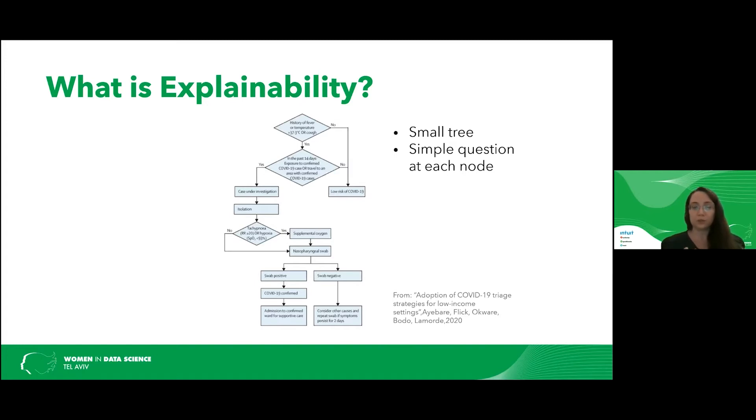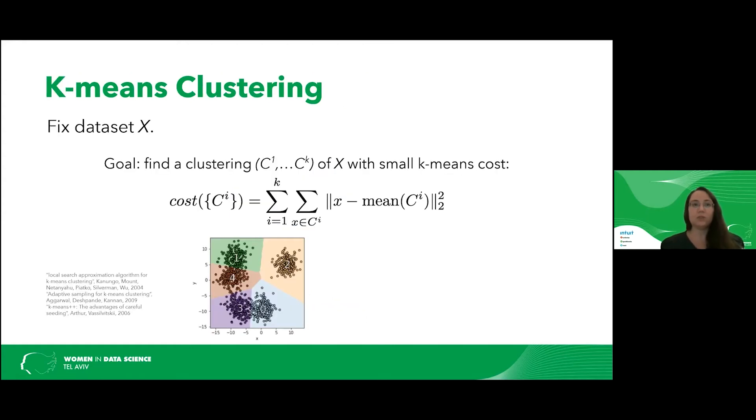What we want to do in this work is take this idea of explainability into the realm of k-means clustering. So in this problem, we have a data set X, and the goal is to partition it into k parts, such that the k-means cost is small, where the k-means cost is simply the square distance between a point and its average.